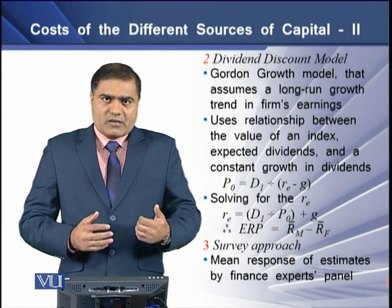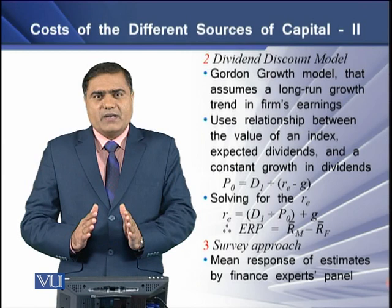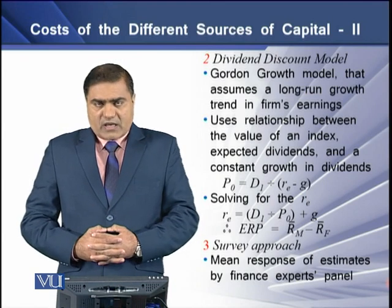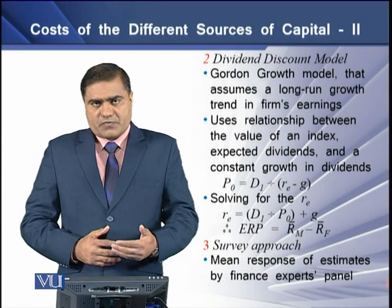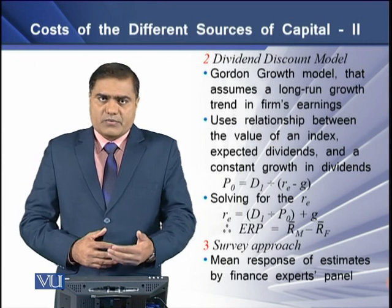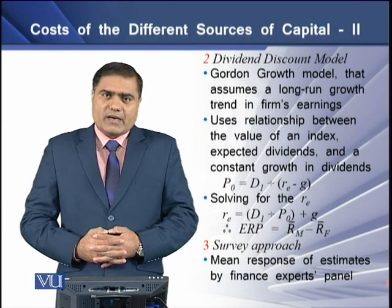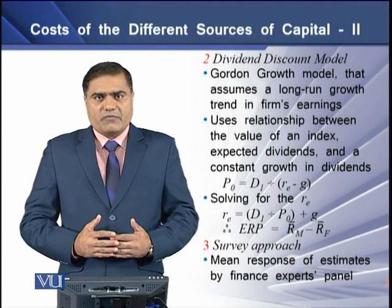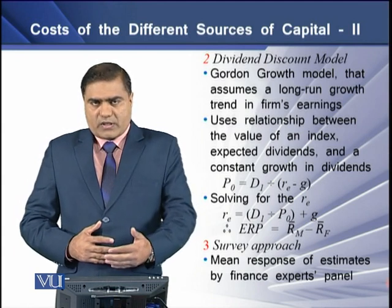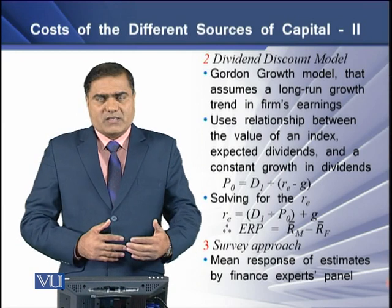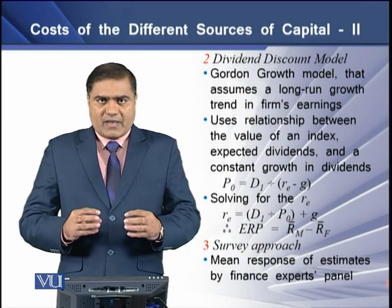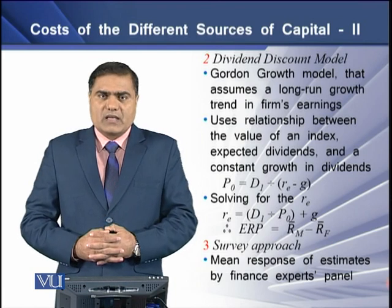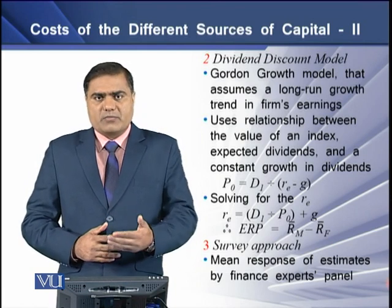Rearranging the equation, RE equals D1 divided by P0 plus G — that is, dividend yield plus the growth rate. Therefore, the equity risk premium is the difference between RE and RF produced here. The third approach to determine equity risk premium is the survey approach, where we gather opinions from different financial experts, average them, and use that average value as the equity risk premium.